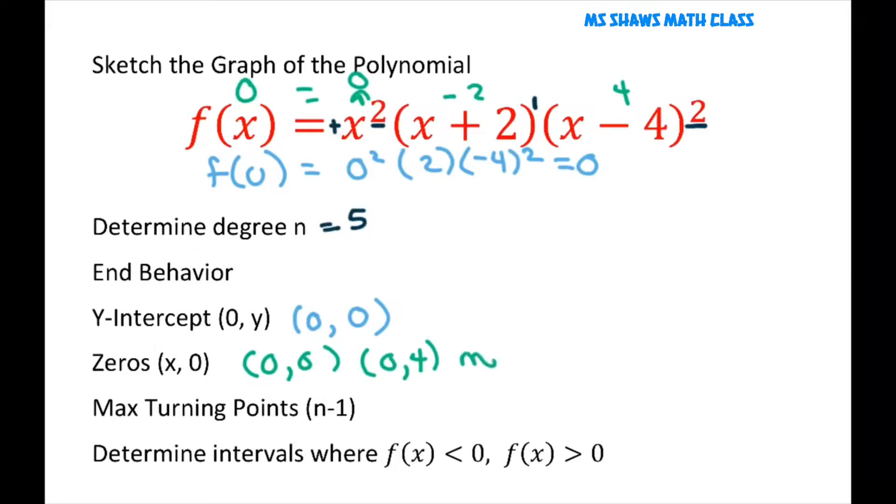And both of those have multiplicity of 2. And then this one is 0, negative 2 with a multiplicity of 1. That tells you if the graph is going to cross the x-intercepts or not. And we'll talk about that in a minute.